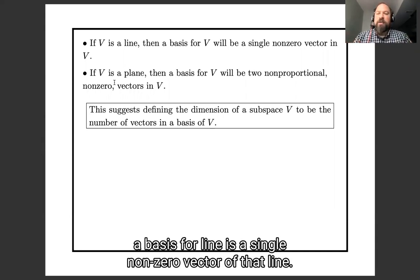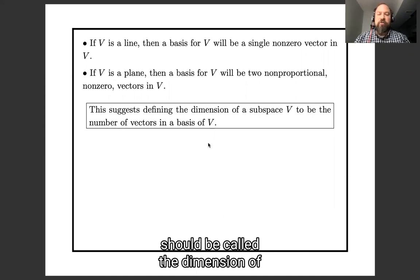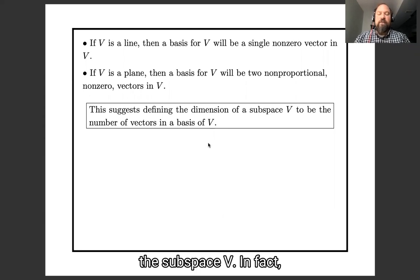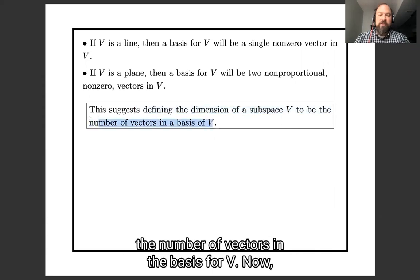In general, whenever we have a plane, a basis for that plane is two non-proportional non-zero vectors. And whenever we have a line, a basis for that line is a single non-zero vector in that line. This suggests that the number of vectors in our basis should be called the dimension of the subspace V. In fact, we are going to define the dimension of a subspace to be the number of vectors in the basis for V.